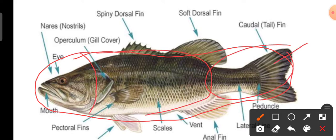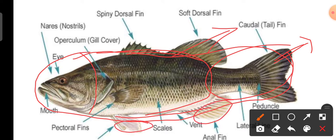The tail region is important for detection and movement, which is known as the caudal fin. The dorsal side has a dorsal fin, and there are ventral fins, anal fin, pelvic fin, and pectoral fin. There is also an operculum, nostril, eye, mouth, lower jaw, upper jaw, and the body surface is covered with scales.